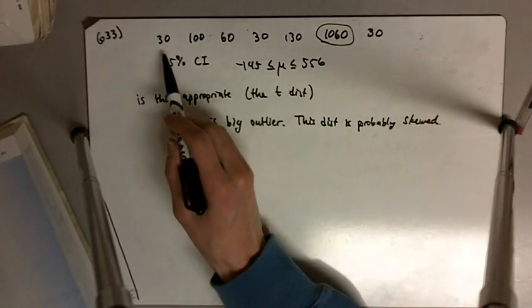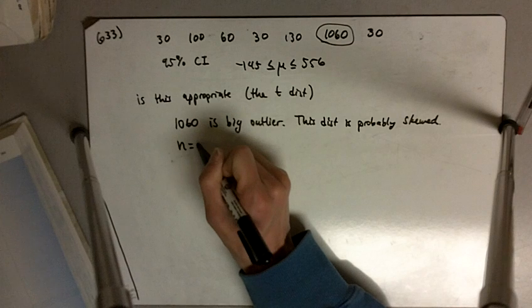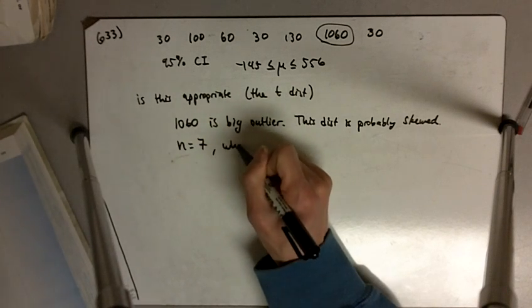And here, our sample size is only seven. n equals seven, which is a pretty small sample.